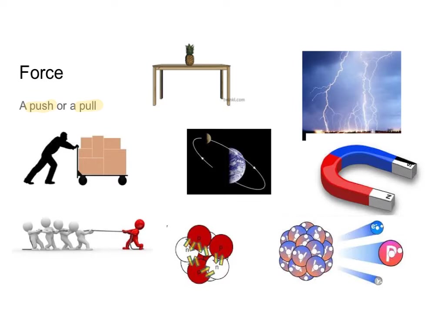However, the rest of these examples are a little less obvious. For example, in this image here, I have the table pushing up on my pineapple in what I call the normal force, or Fn. Next, I have a picture of the moon going around the Earth, and this is of course going to be the gravitational force, F sub g. The rest of these images are even more esoteric and we won't be getting to a couple of them until next year.